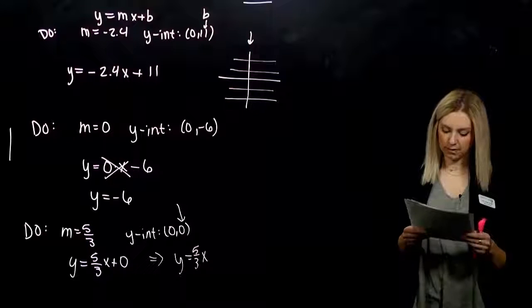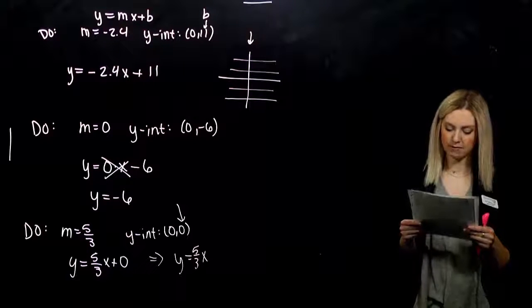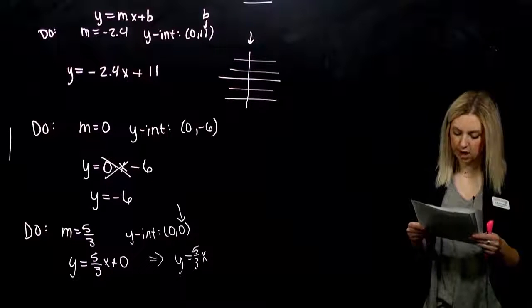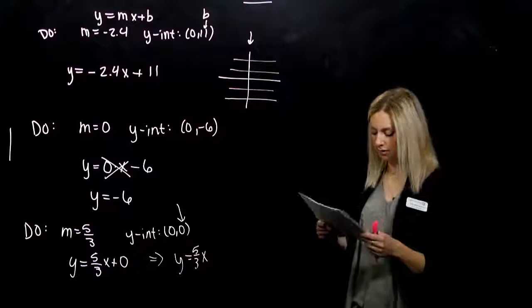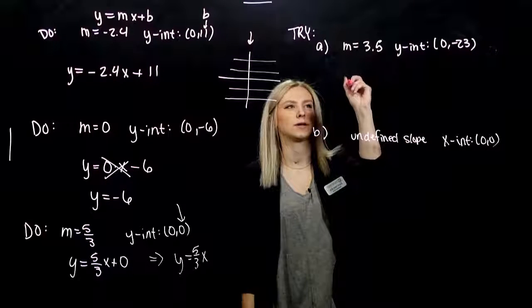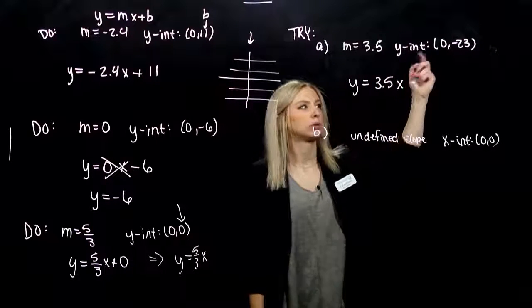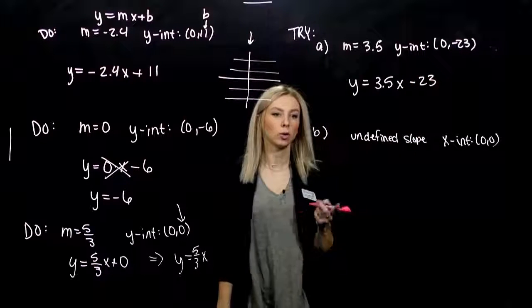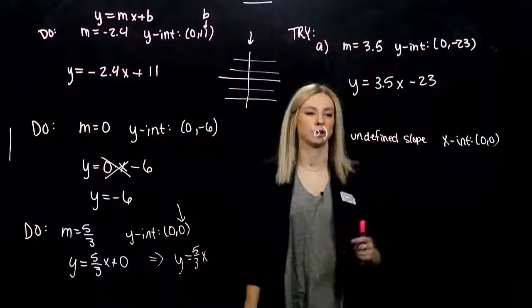Take the next two. Give me an equation of a line that has slope 3.5, y-intercept (0, -23), and a line that has undefined slope and an x-intercept going through (0, 0). The first one was pretty straightforward. It gives us the values, we just plug them in. Y equals mx, but in this case it's negative, so minus 23. The equation tells us what it looks like.